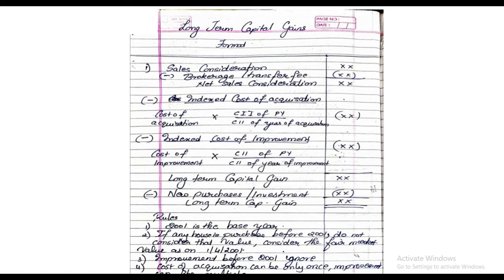This is the format for solving sums based on long-term capital gains. The sum starts with number one: Sales Consideration — the value at which you're going to sell your property in the previous year. Less brokerage or transfer fees gives you Net Sales Consideration. From net sale consideration, you subtract the Indexed Cost of Acquisition, which is the cost price of the property indexed to the previous year. The formula is: Cost of Acquisition × CII of previous year ÷ CII of year of acquisition.